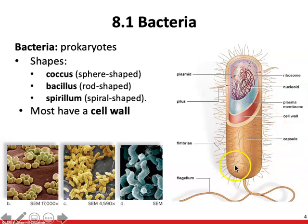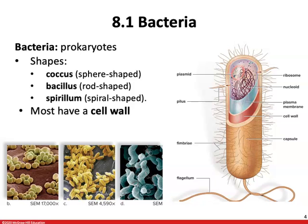Bacteria are classified by differences in their cell walls, detected using a gram stain. Bacteria with a thick layer of peptidoglycan will stain purple and are called gram positive. If there's no thick peptidoglycan layer, cells stain pink and are considered gram negative. These gram-negative bacteria have an outer membrane with lipopolysaccharides, which are released when the cells are killed by the immune system, stimulating inflammation and fever.